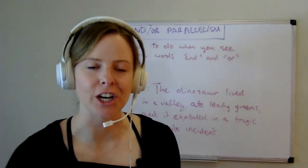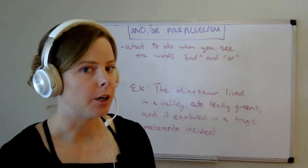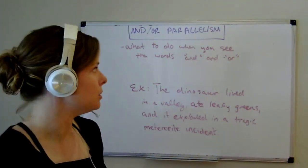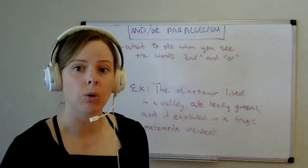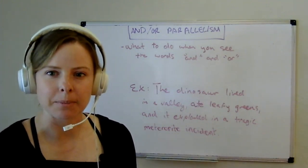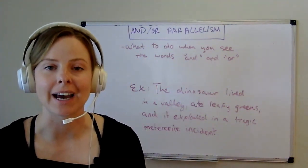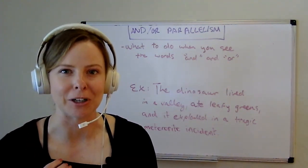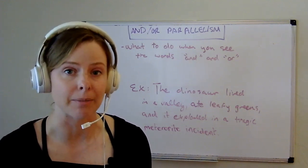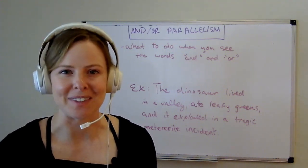Hi, this is Dana with GMAT Ninja, and today I'm going to discuss and/or parallelism. We'll cover what parallelism is, what to do when you see the words 'and' and 'or,' and then finish up with some official examples. As a disclaimer, there are very few rules that you follow 100% of the time on GMAT sentence correction — there are pretty much always exceptions, so don't turn your brain off. You're always thinking about logic and meaning in the sentence.